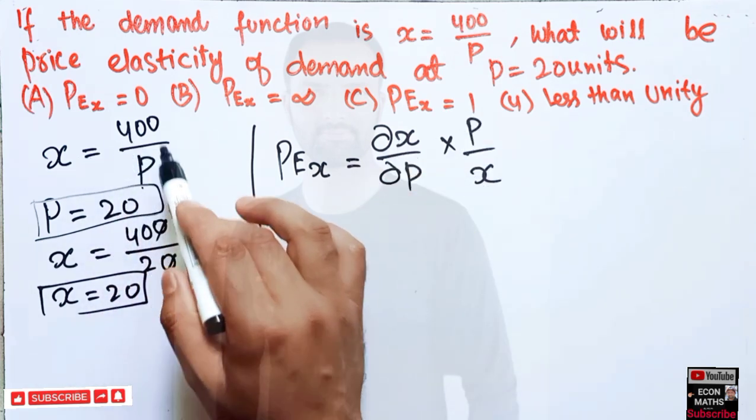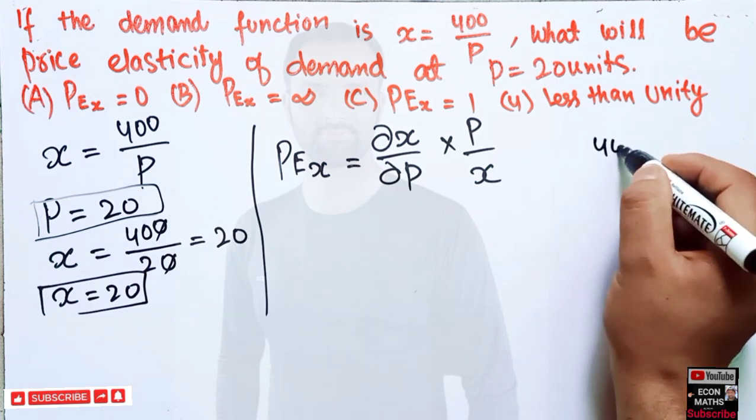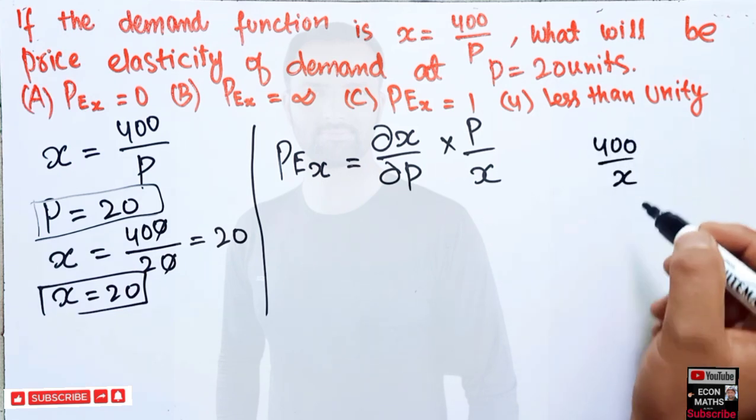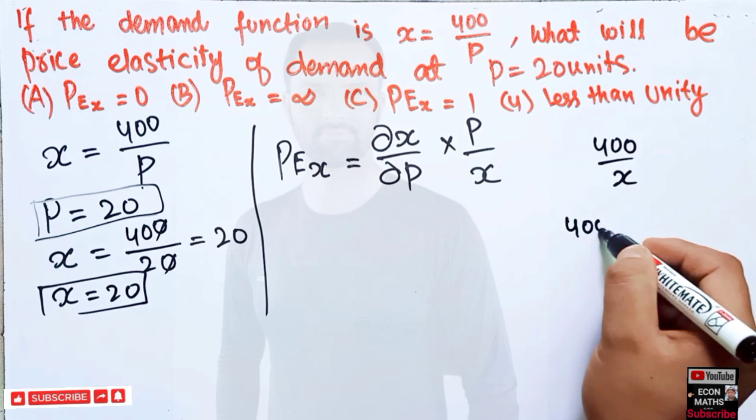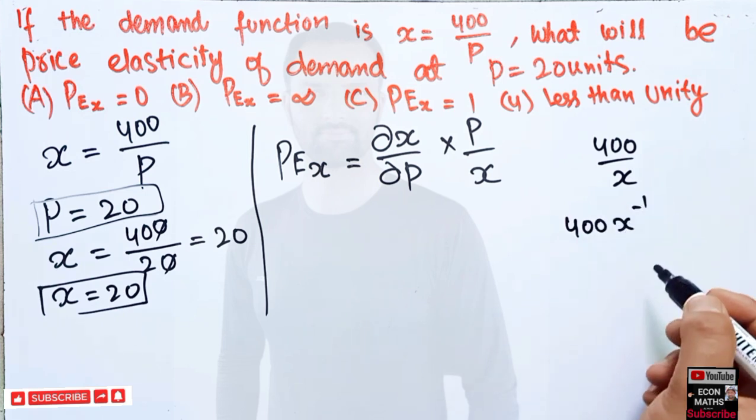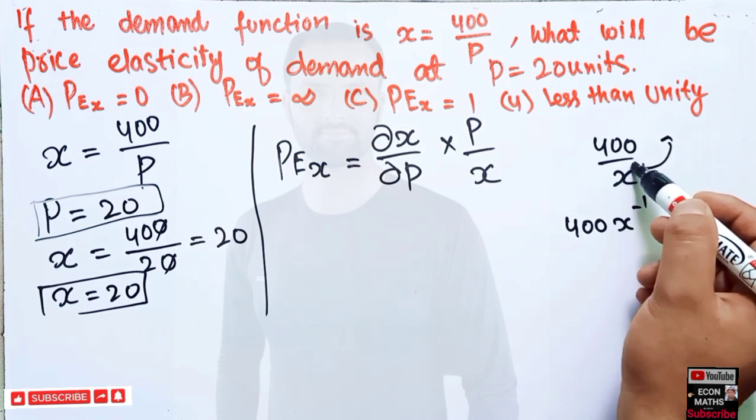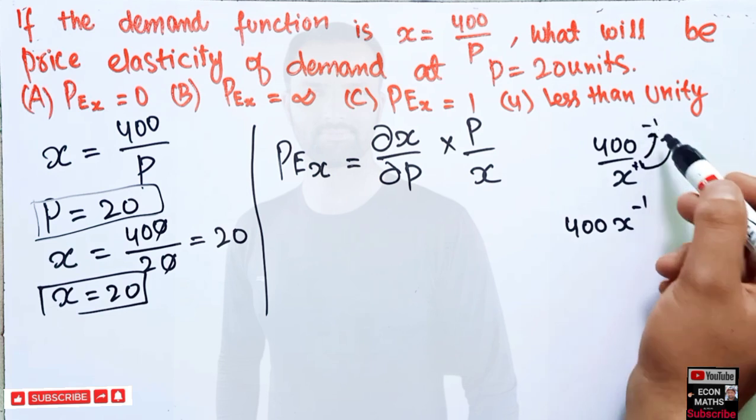So what is the derivative of this demand function? We have 400 upon x. We can write it as 400x to the power minus 1. If we transpose this to the numerator, the sign of the exponent will get changed. So it is plus 1 here, it will become minus 1.